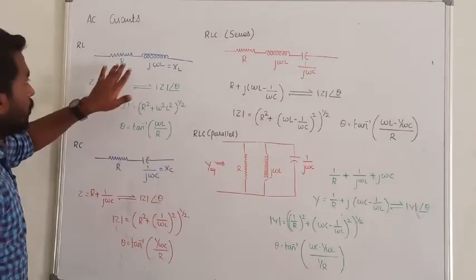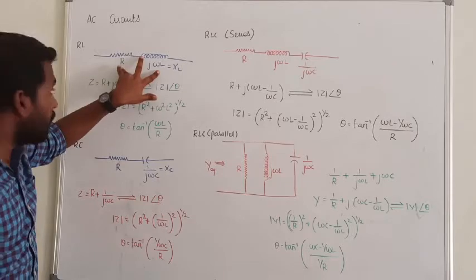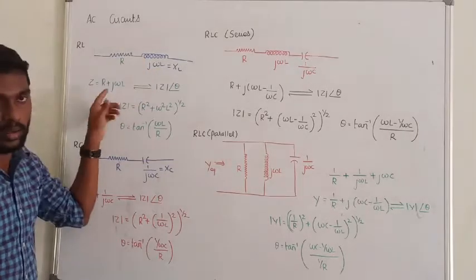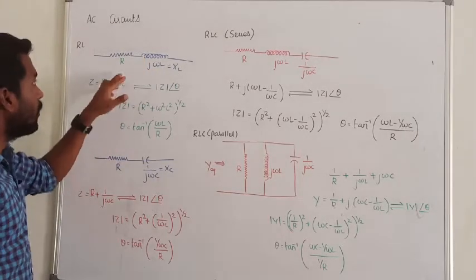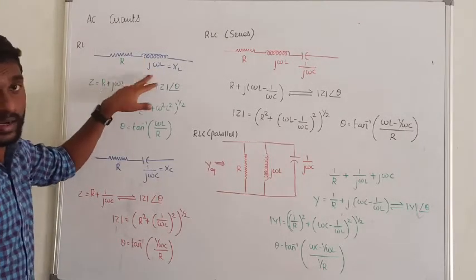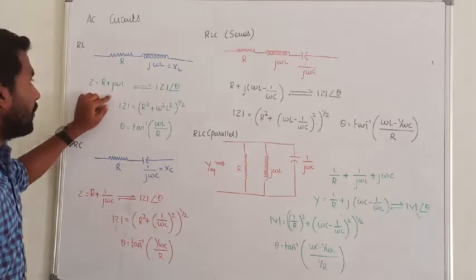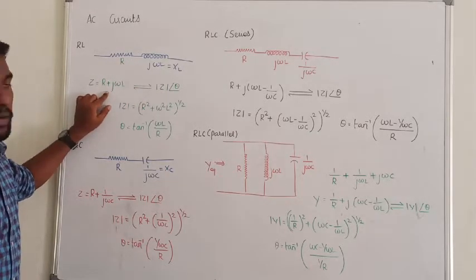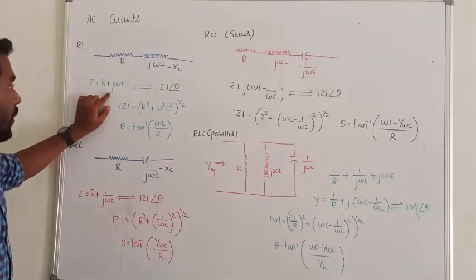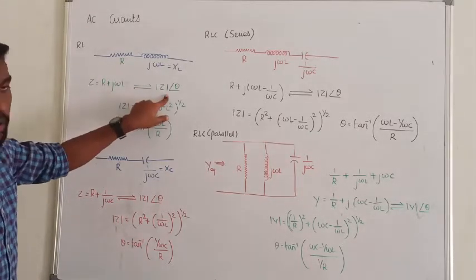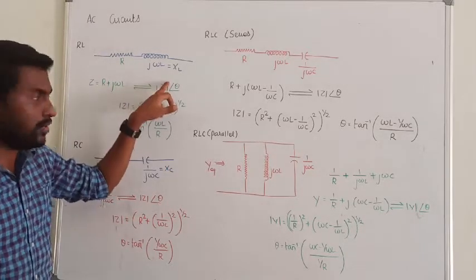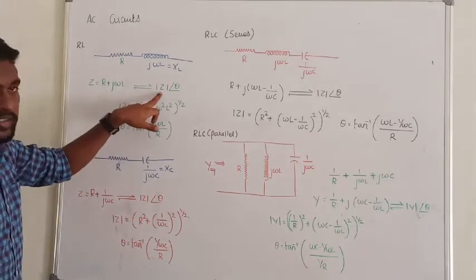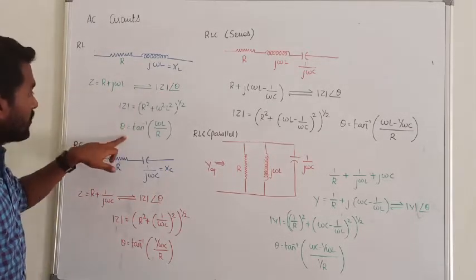We must have a resistor connected in series. What is the total impedance value? The series value is connected in series. This is the rectangular coordinate form. This is the rectangular form. This is the polar form. This is the magnitude mod Z, and this is the phase angle.